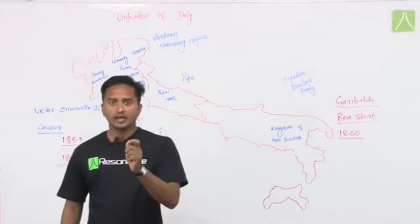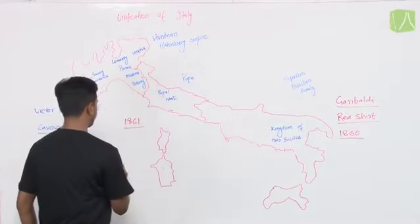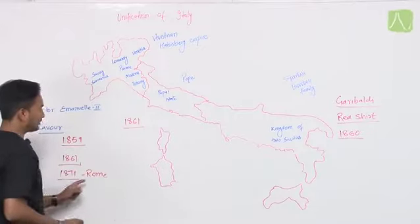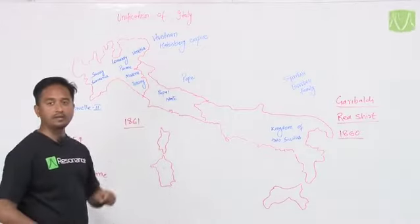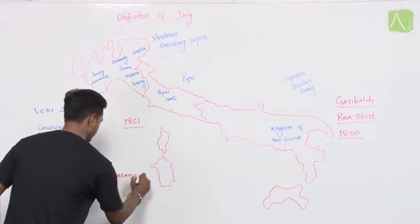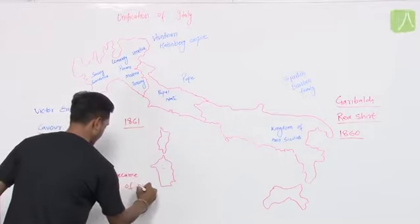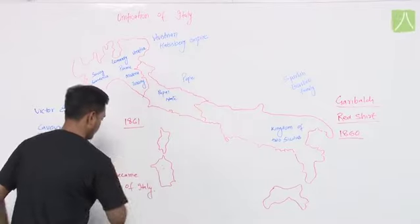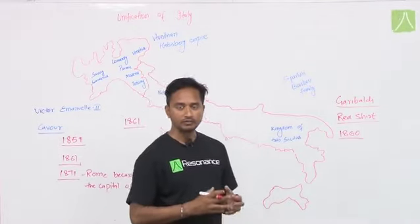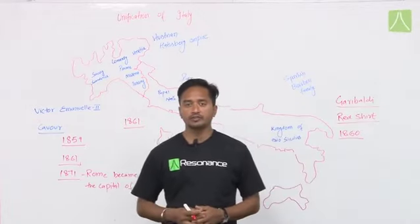In 1871, one more empire joined Italy — Rome. In 1871, Rome joined Italy, and the same year that Rome joined Italy, Rome became the capital of Italy. In this way, the different parts of Italy came together in a unified form, and Italy became much stronger and unified.